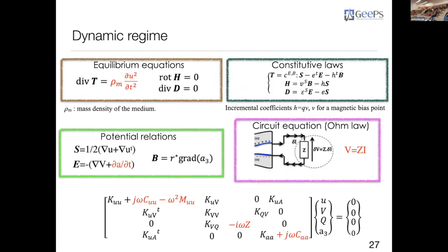For the dynamic regime, we follow the same process but modify the equilibrium equation by adding dynamic displacement terms. The constitutive laws use incremental elements at fixed bias points. In the potential relations, we add the eddy current effect inside the system. It is also possible to add circuit equations — Ohm's law — into the system. The resulting system is then solved with the finite element method.